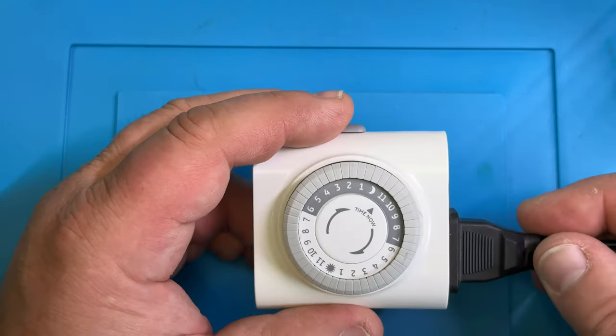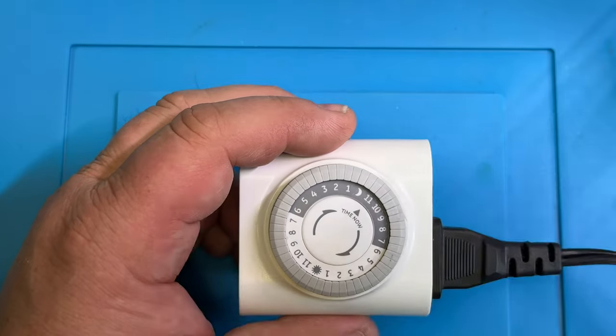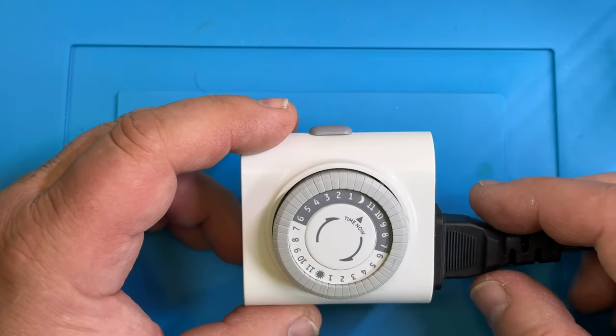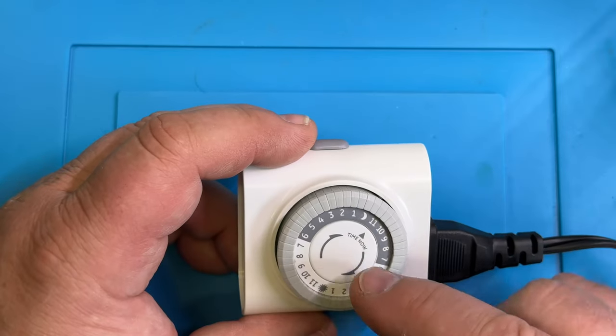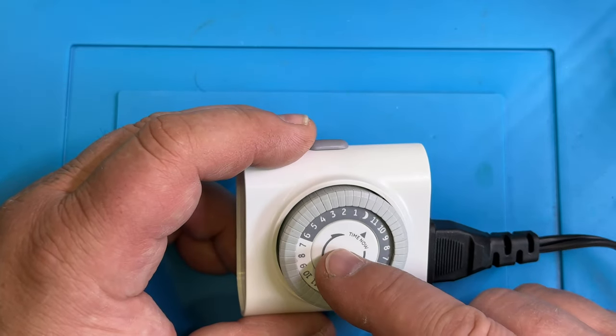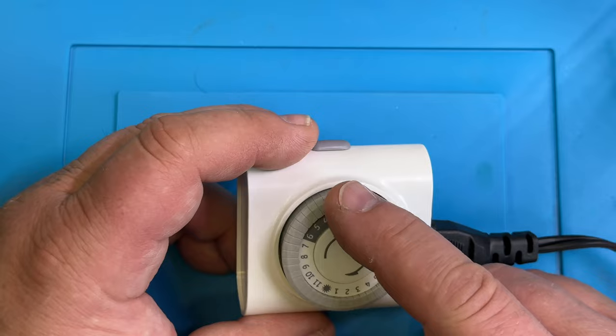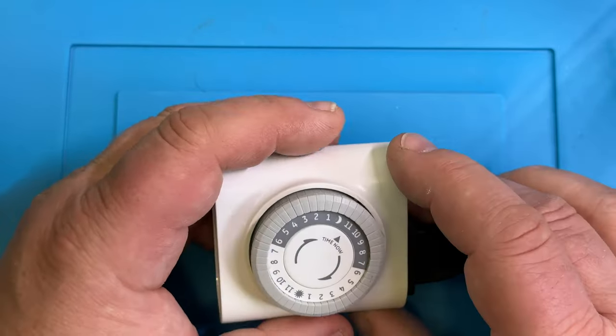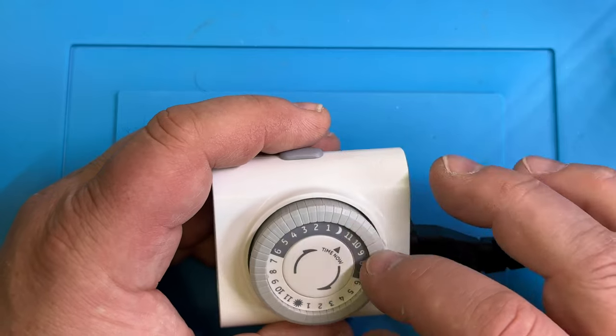If the device you plugged in has a power switch, it must be in the on position in order to operate with this timer. So now the connected device is turned on and off based on the position of those pins we just pulled out. We pulled them all out, so it will only turn on when a pin is pushed in at that certain time.